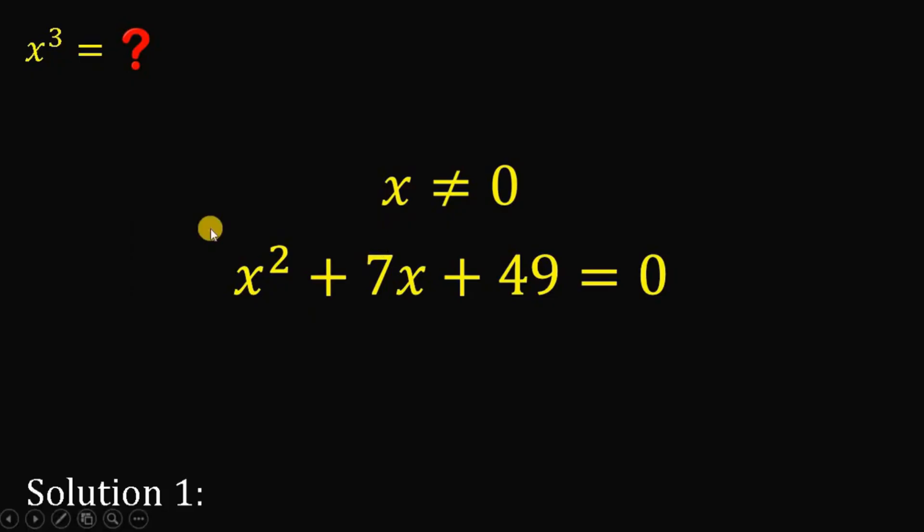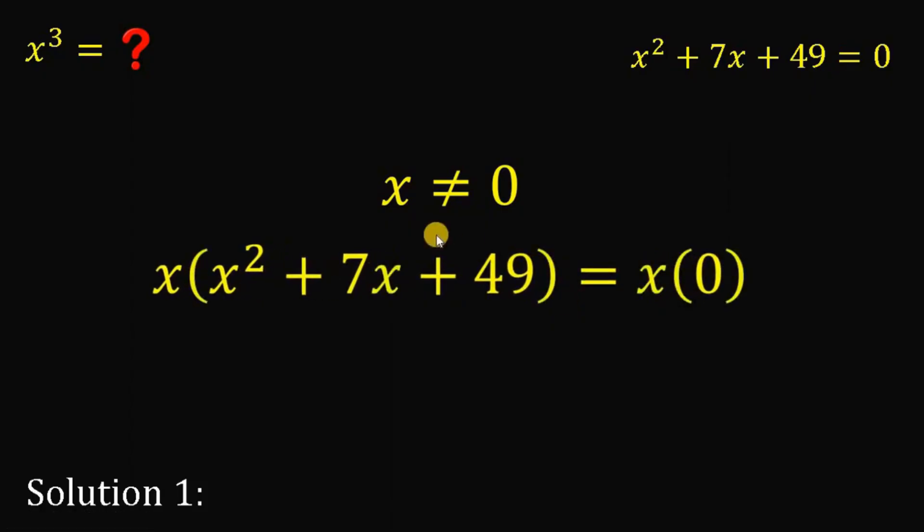Now, the question is why we do that, or why we say that, because what we're going to do here is to multiply both sides by x. Now, this is safe because we know that x is not equal to 0. But before that, let's put this equation right here. Maybe we will use this equation later on. Now, again, let's multiply both sides by x. Again, this is safe because we know x is not equal to 0.